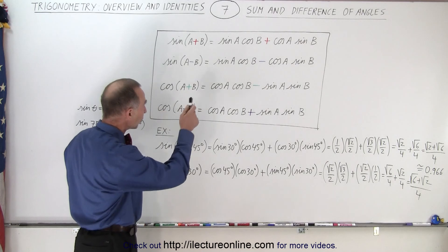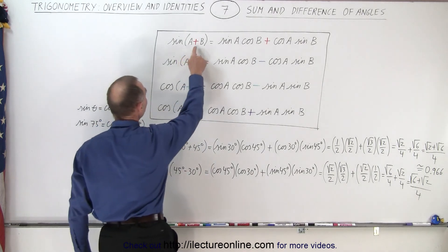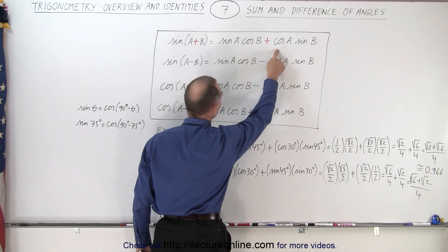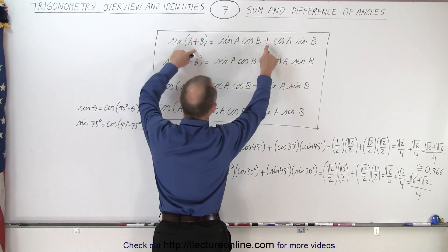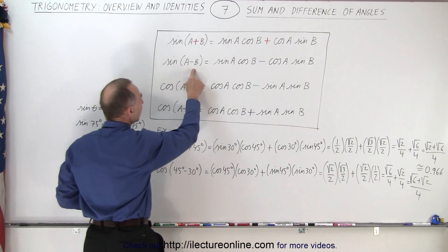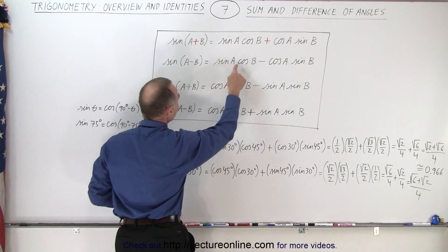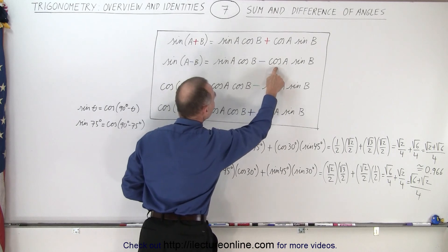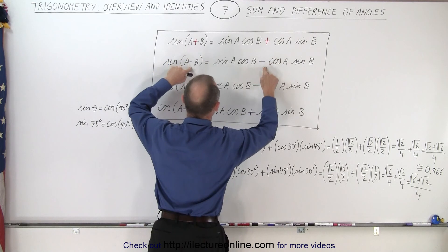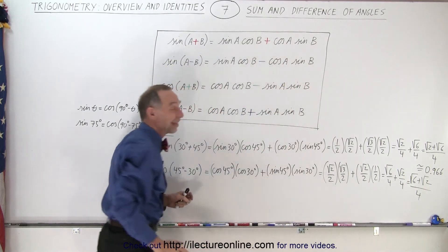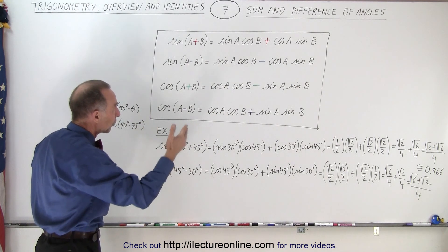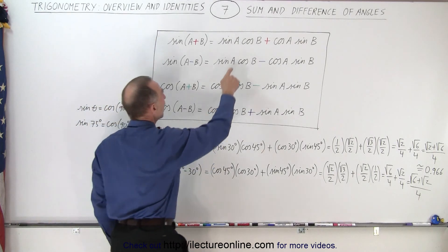For each one of those we have an identity, so the sine of a plus b is equal to the sine of a times the cosine of b, plus the cosine of a times the sine of b. Notice that the signs match when we're dealing with the sine. On the difference of angles, the sine of a minus b is equal to the sine of a times the cosine of b minus the cosine of a times the sine of b. Notice how similar they look — the only difference is the plus or minus sign. It's a sine times cosine plus cosine times sine, and the angles go a, b, a, b.